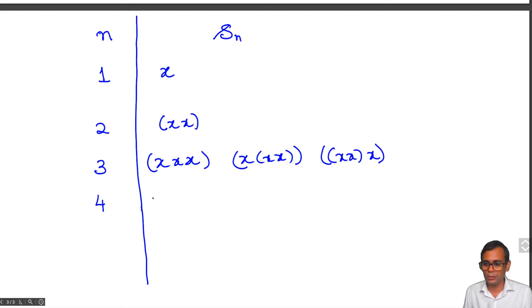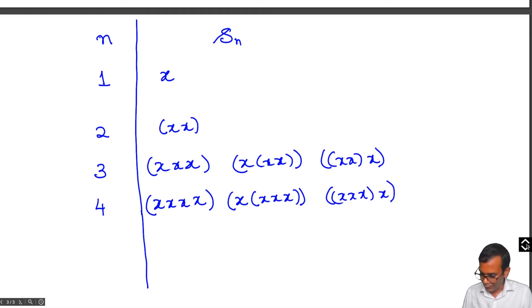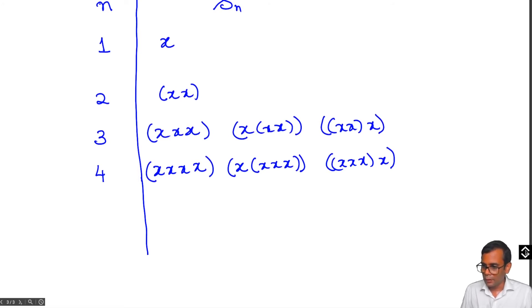For n=4 suddenly the number grows quite a bit. Of course you have the case where you take 4 symbols of size 1 and bracket them. Now let's look at the case where we take 1 symbol of size 3 and 1 symbol of size 1. You can either do x bracketed with 3 x's or 3 x's and then x. Then we can do 2 symbols of size 2 each, so (xx) bracketed with (xx).